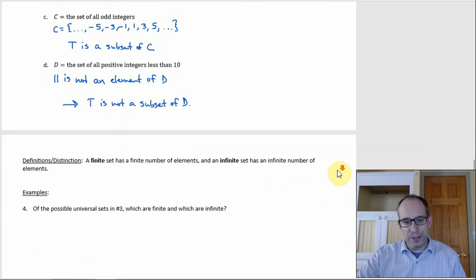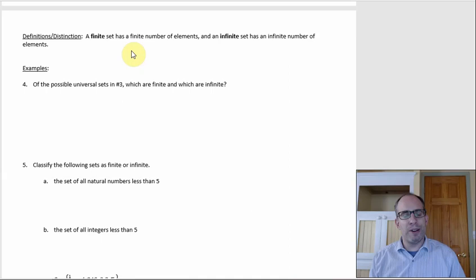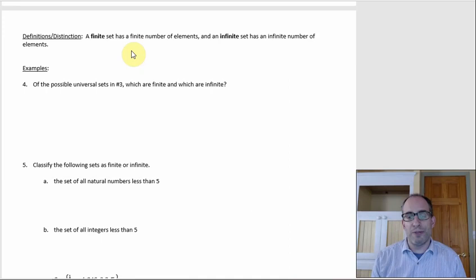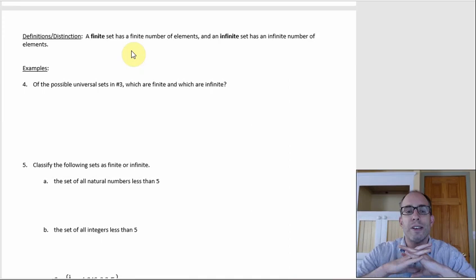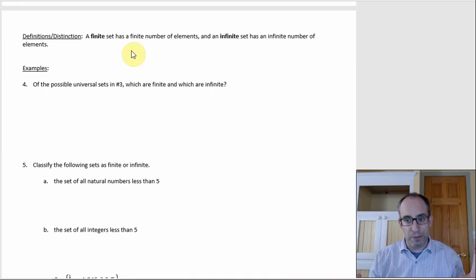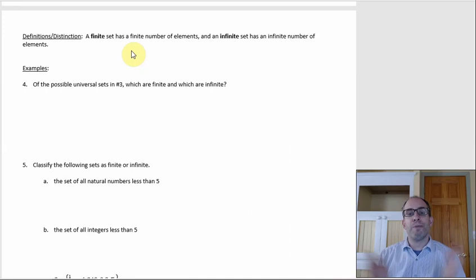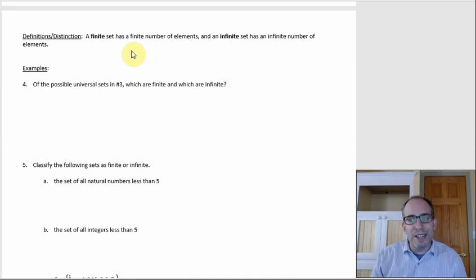There's a definition here about finite and infinite sets. A finite set has a finite number of elements, and an infinite set has an infinite number — which sounds obvious, but here's what it means in practice: if you wrote out a finite set using the roster method, you'd eventually stop. You could have 4 elements or 50 and still be finite. If you wrote out a set and could never stop — had to put an ellipsis — then that's infinite.